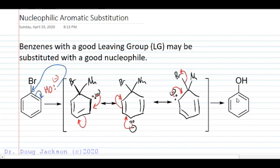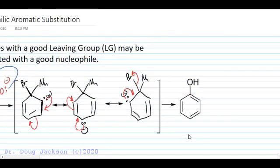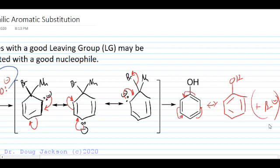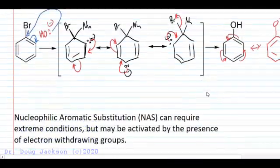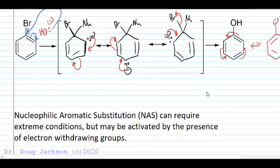I have the bonds here in the opposite orientation as our mechanism would have predicted, but because we have an aromatic ring, this resonance has also developed, so it is the same structure. We've kicked off our leaving group byproduct. This is a very difficult reaction, so it requires extreme conditions, and even substituted benzenes can require extreme conditions.